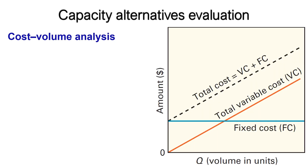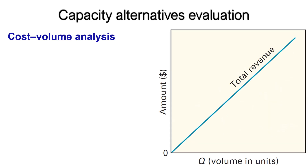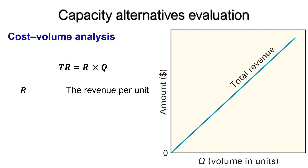The shown figure illustrates the relationship between the output volume and the fixed costs, the total variable costs, and the total costs. Total revenue will have a linear relationship to output, as illustrated in this figure. The total revenue associated with a given quantity of output is TR = R × Q, where R is the revenue per unit.